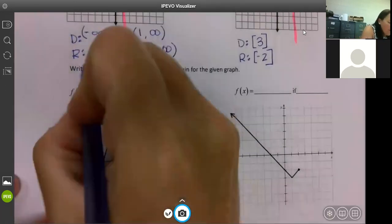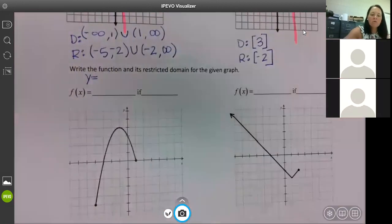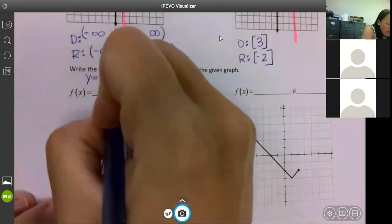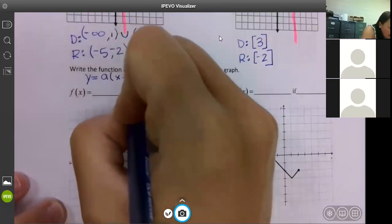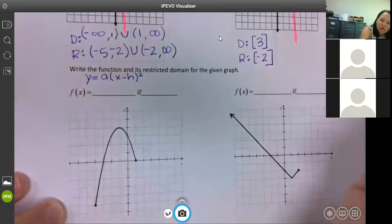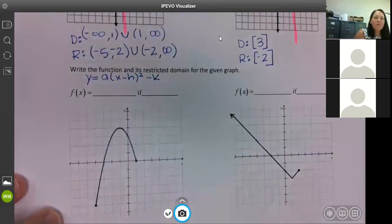Yeah. So remember our regular function is y equals a times, I'm going to write it like this now, x minus h squared minus k and that's our vertex. Our h and our k are our vertex.